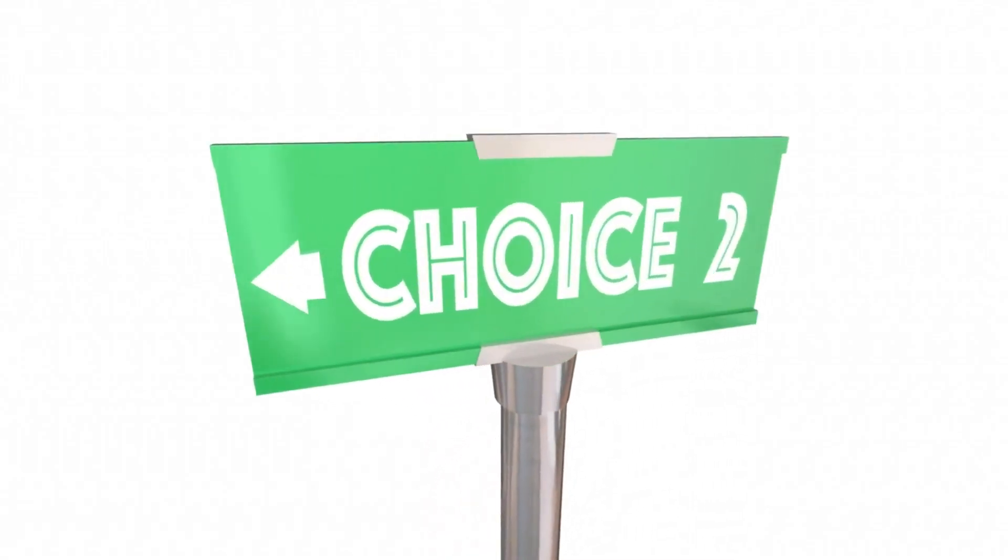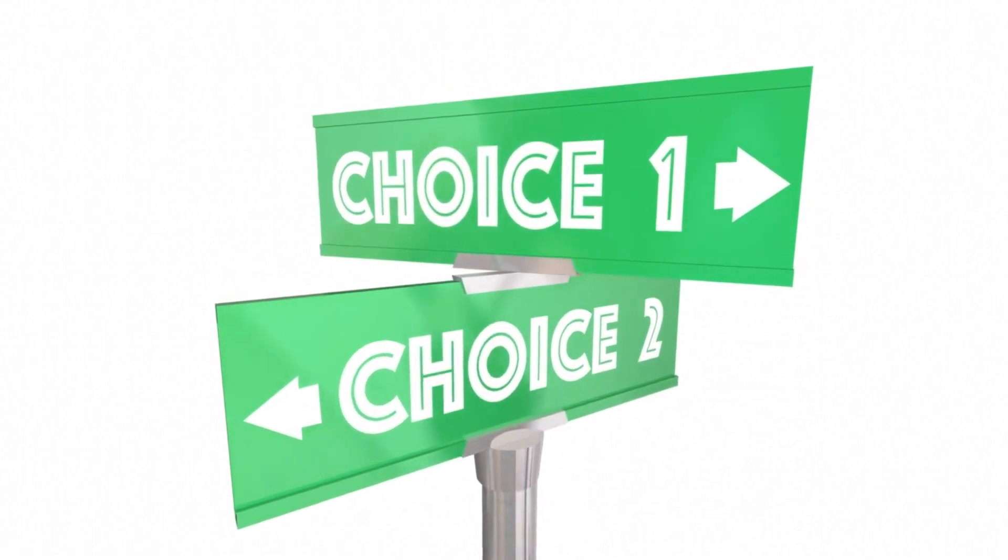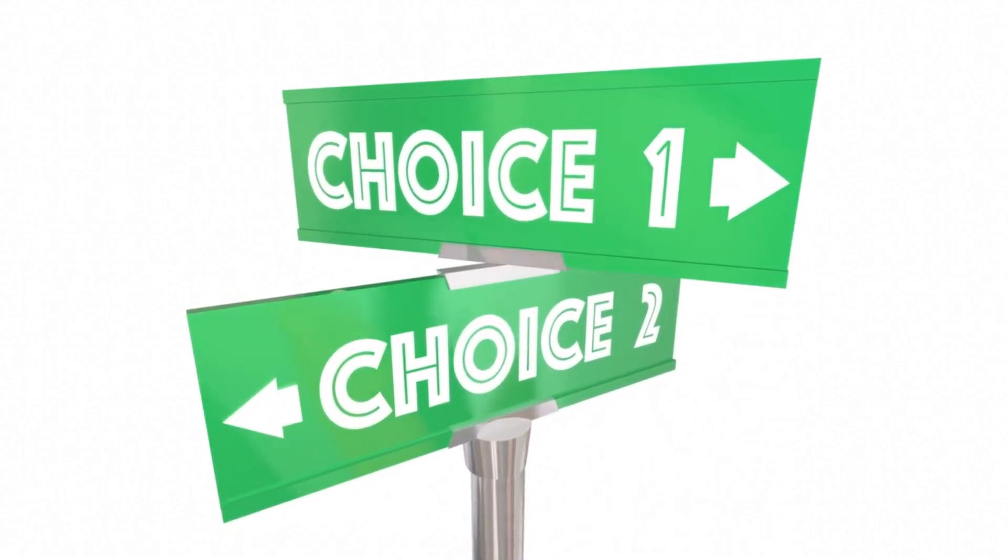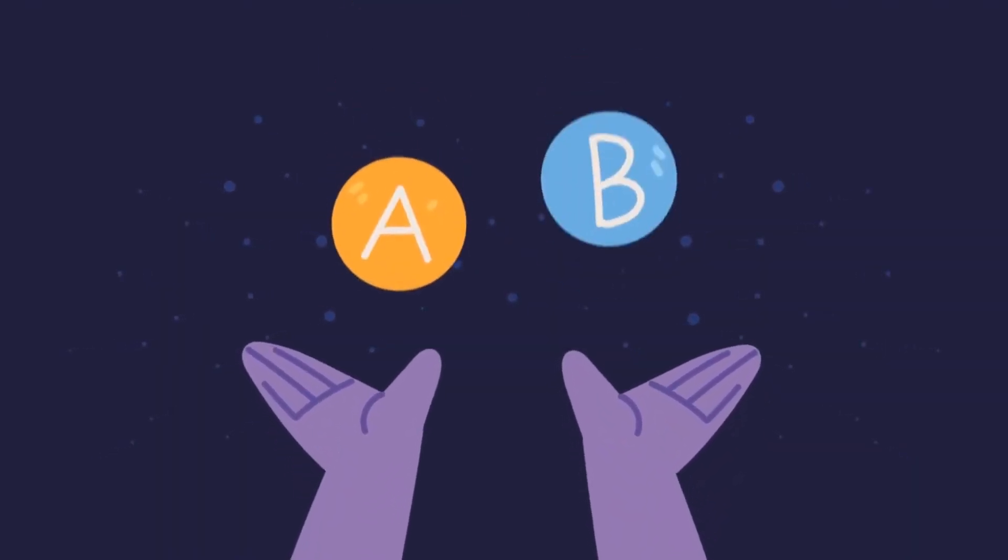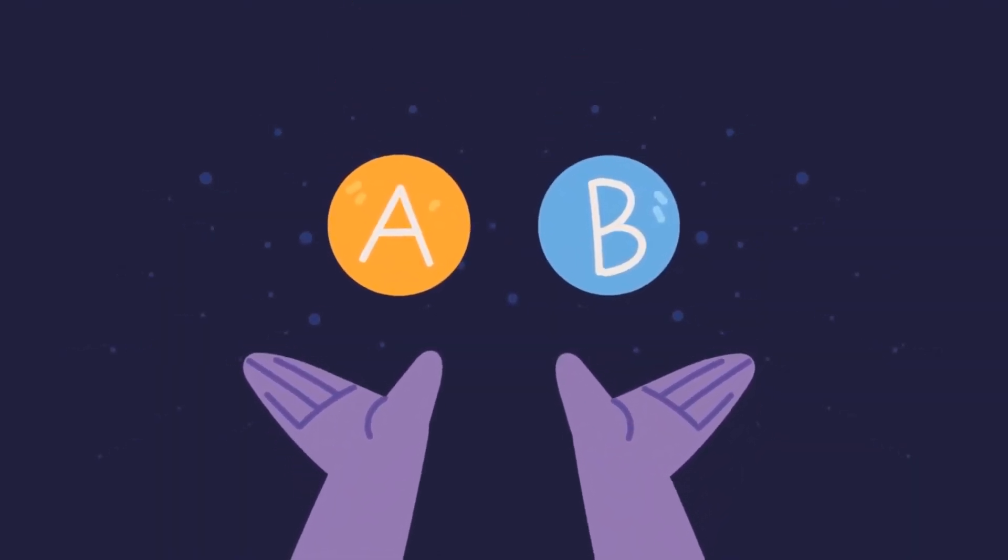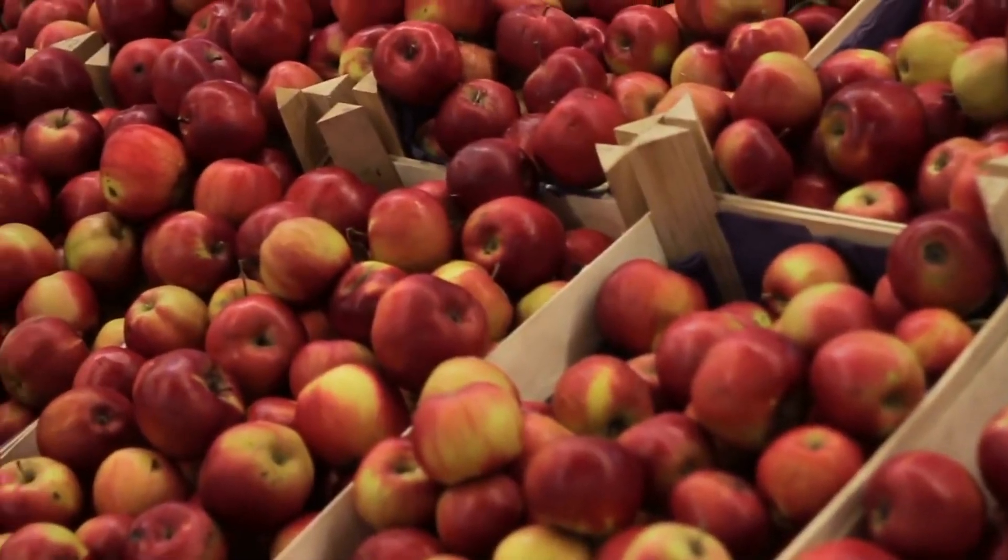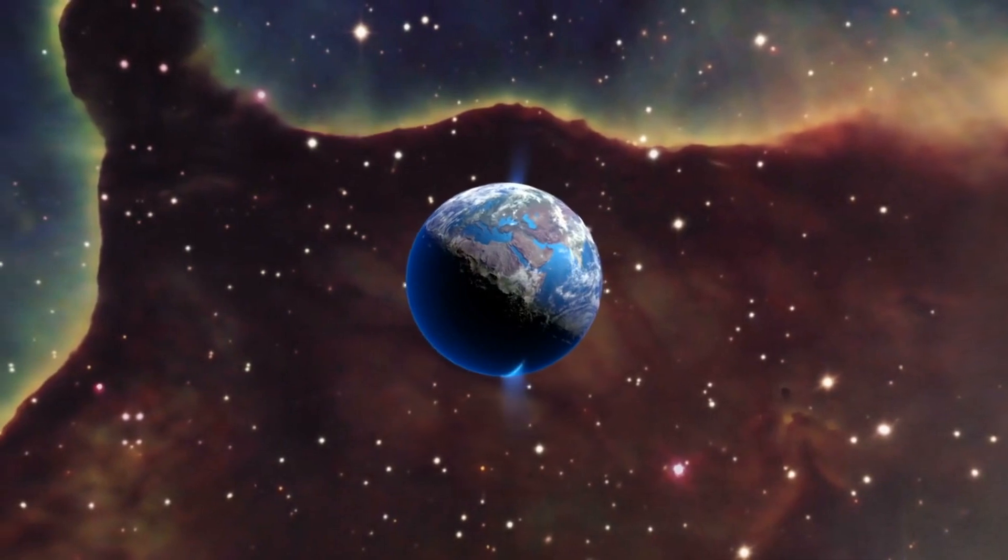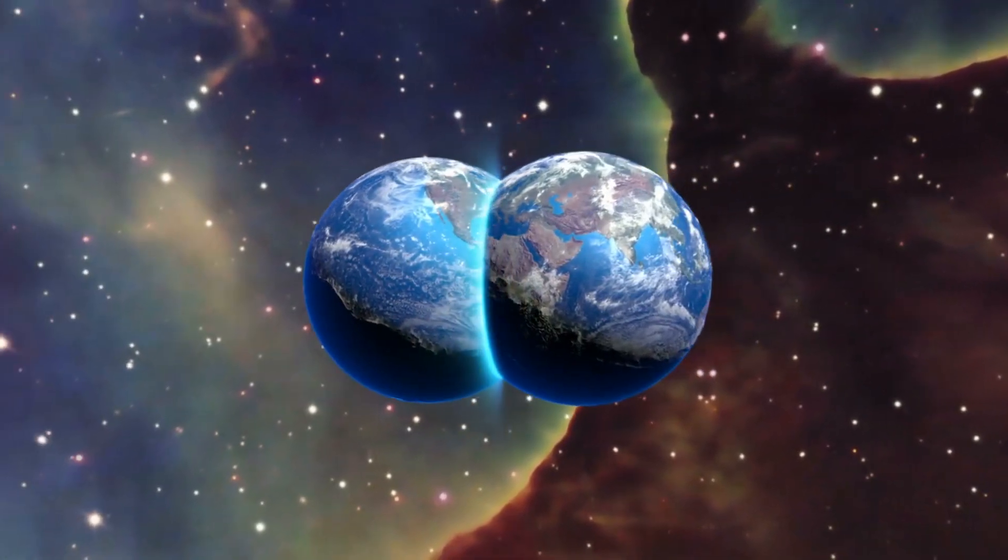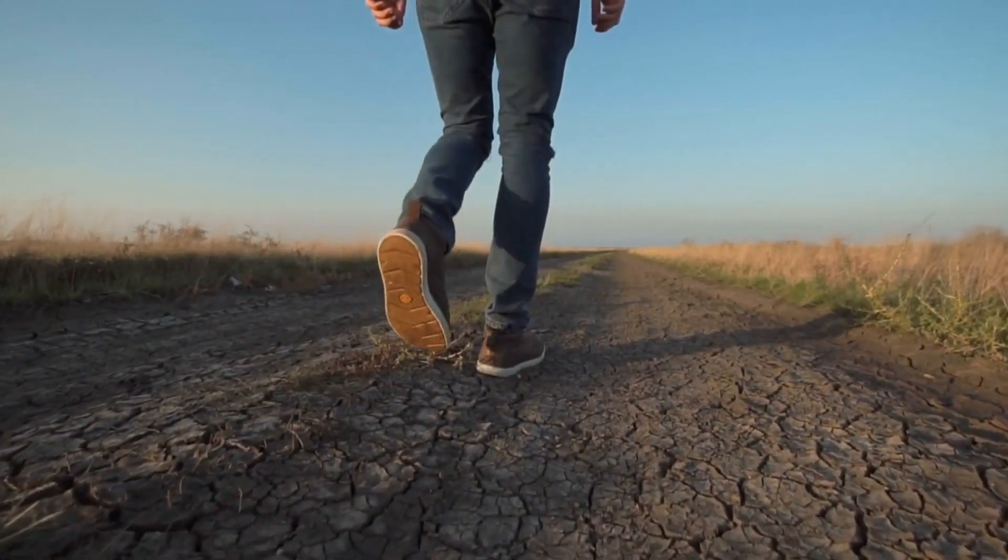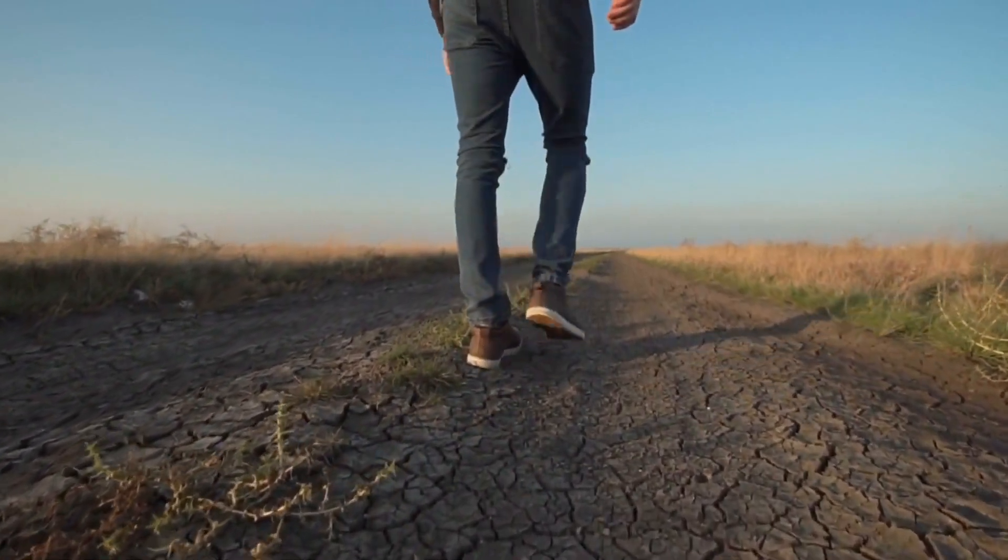Do you remember the crossroads we discussed earlier? This is a perfect analogy for the many-worlds interpretation of quantum mechanics, also known as the quantum multiverse theory. In this theory, every decision or event creates a split in the universe. So let's say you're deciding between having an apple or an orange for a snack. In the many-worlds interpretation, the moment you make a choice, the universe splits into two: one where you chose the apple, and another where you chose the orange.